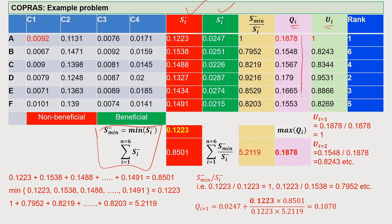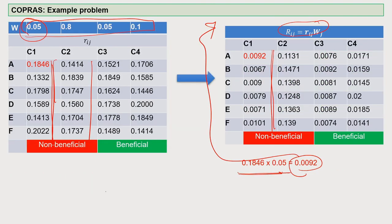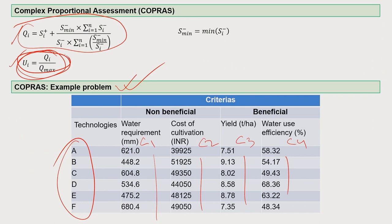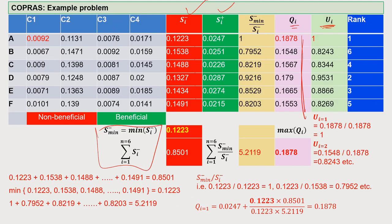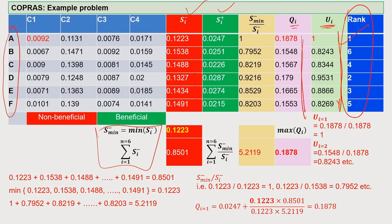Once Q_i is determined, you have already approached the ranking stage. From Q_i you calculate U_i, which is the final step for the COPRAS method. Once U_i is available, the ranking is clearly obtained. Step by step you calculate different indices and finally reach the ranking. The ultimate goal is ranking the alternative technologies — here, technology A emerges as the best solution among the six alternatives.